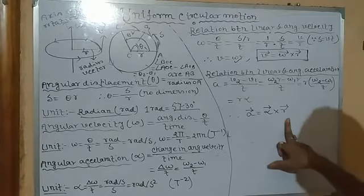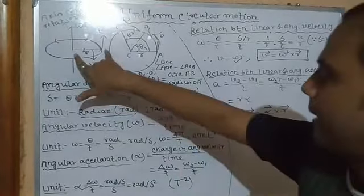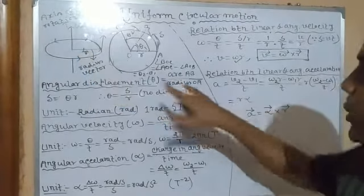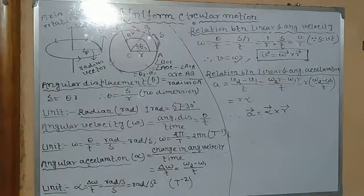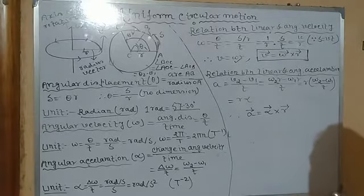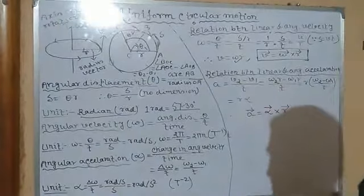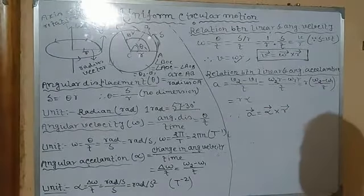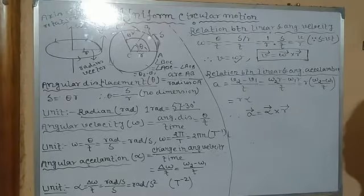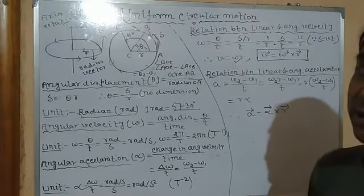To summarize: travel distance equals angular displacement times radius vector; linear velocity equals angular velocity times radius vector; linear acceleration equals angular acceleration times radius vector. So if we multiply the angular terms — angular displacement, angular velocity, and angular acceleration — by the radius vector, we get the linear terms. Conversely, dividing linear displacement, linear velocity, or linear acceleration by the radius vector gives us the angular terms.